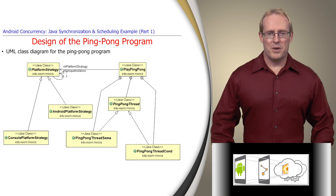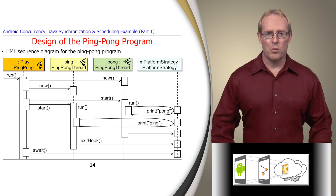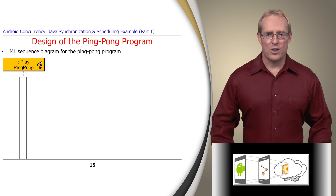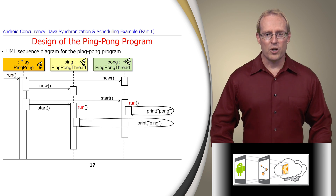The ping pong program is structured using an object-oriented design, consisting of a number of classes associated with each other by inheritance and containment relationships, as shown in this UML class diagram. This UML sequence diagram depicts the flow of control between the key classes in the program. The main entry point method creates and starts a thread passed an instance of the PlayPingPong runnable implementation. The run hook method of PlayPingPong creates and starts two PingPongThread objects, whose run hook methods are template methods that implement the ping pong algorithm concurrently using a pair of synchronizers, which can either be Java semaphores or condition objects.